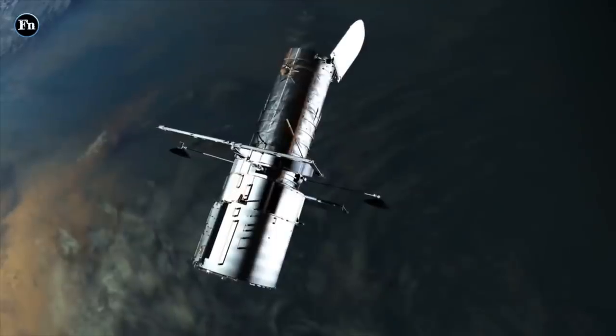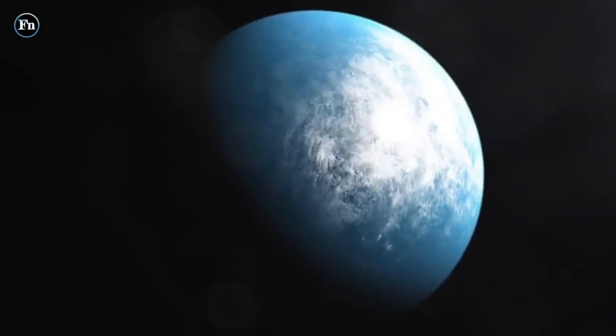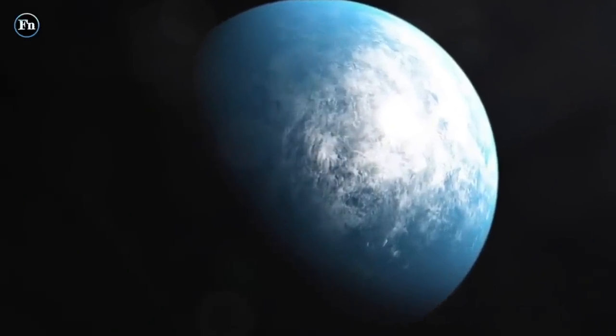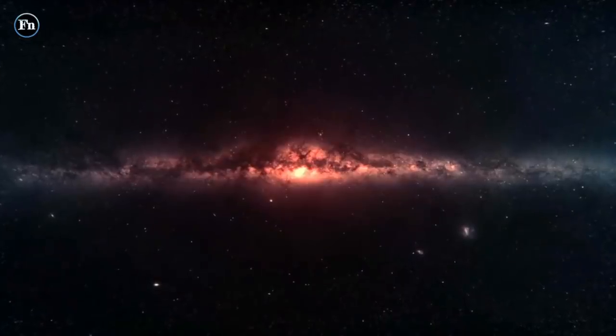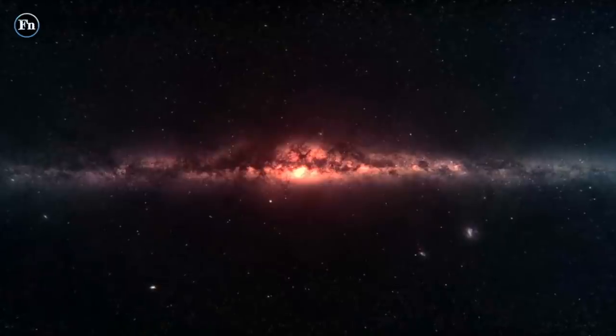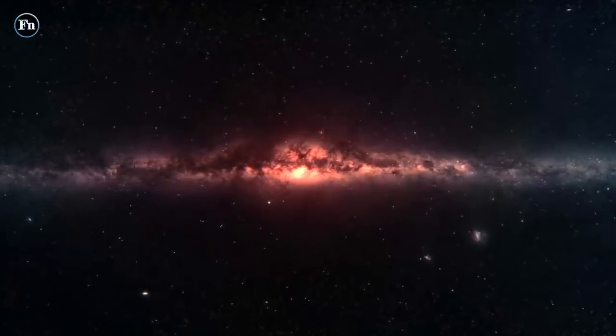It's an exoplanet, likely rocky, orbiting TOI 700, a red dwarf star 101.4 light-years away in the Dorado constellation. It has been suggested that the planet receives about 86% of the Earth's energy from the sun.